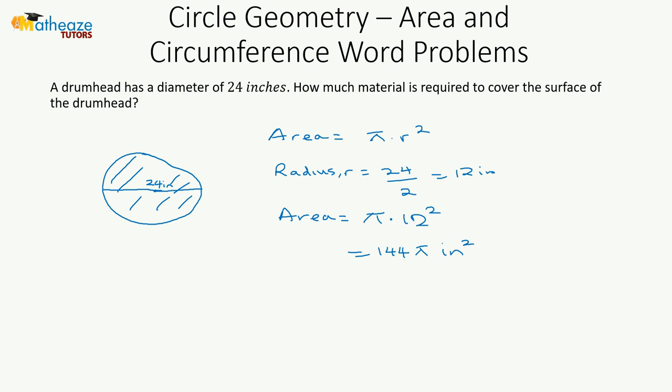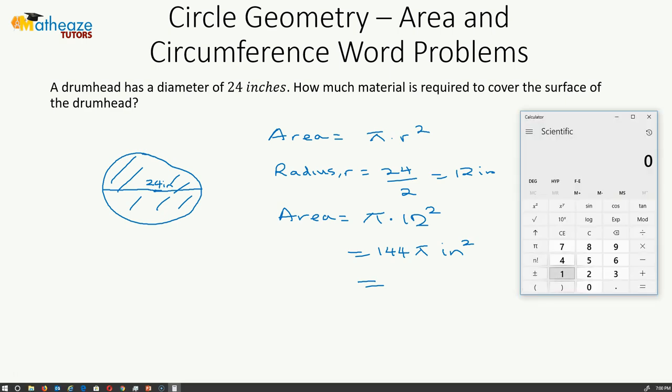Now we're going to multiply 144 by pi. Using a calculator, 144 multiplied by pi.